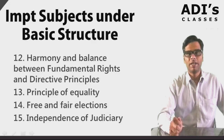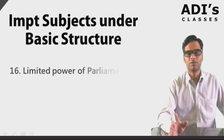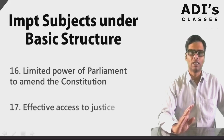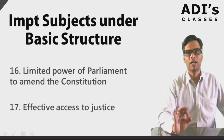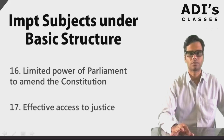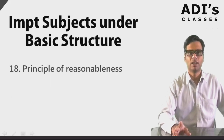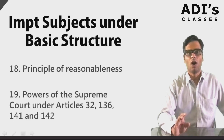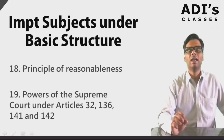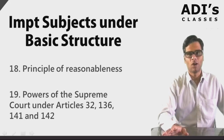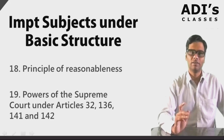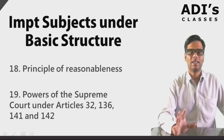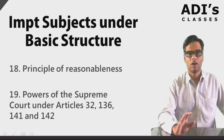We also have limited power of the parliament to amend the constitution as part of the basic structure, so that any law giving parliament unlimited power to amend the constitution will be invalid. Effective access to justice, the principle of reasonableness, and the powers of the Supreme Court under Articles 32, 136, 141, and 142 are all part of the basic structure. These topics are inviolable — they cannot be scrapped by the Supreme Court or even by the parliament, as they form the basic skeletal framework of the constitution.